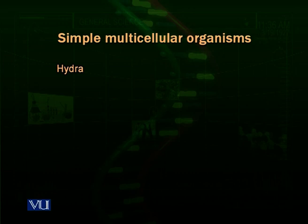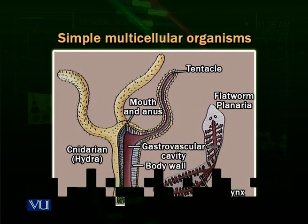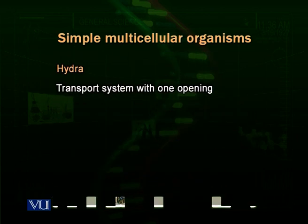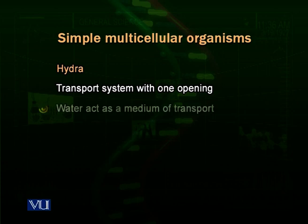It has two layers of cells called ectoderm, the external layer, and endoderm, the internal layer, as you can see in the diagram. And it has a cavity inside its body, sometimes called a gastrovascular cavity, and it has an opening in the center — this one opening.